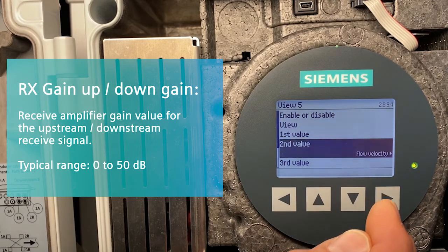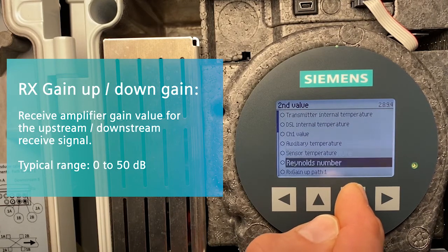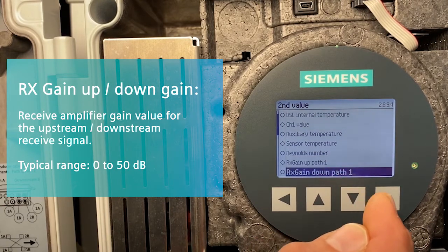Second value. Here I want to have the Rx gain down path 1.